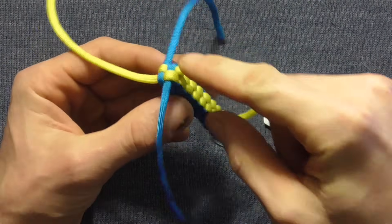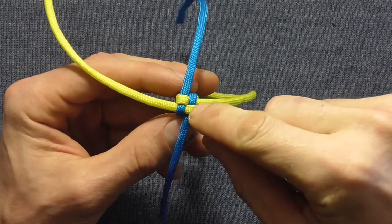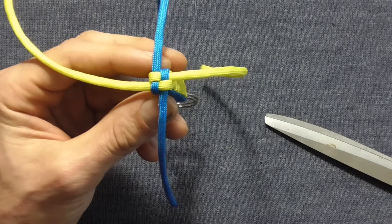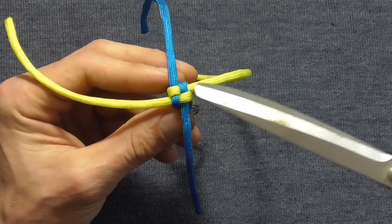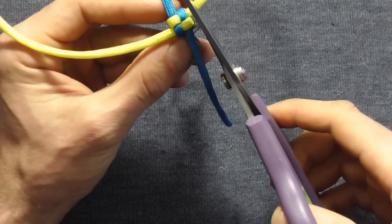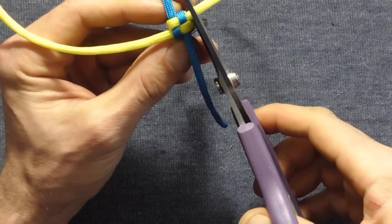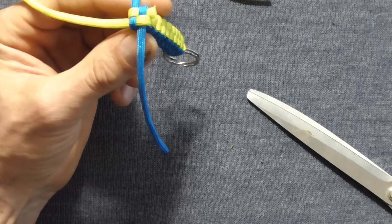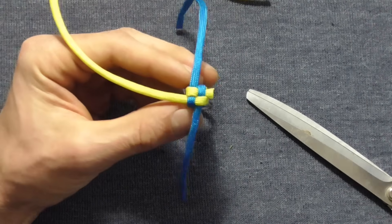So once you get it to the length you want, the last thing you want to do is just make sure that this last knot is nice and tight, and then we can snip these ends, just snip it at about 2mm from the edge, and then just need to singe it with a lighter.